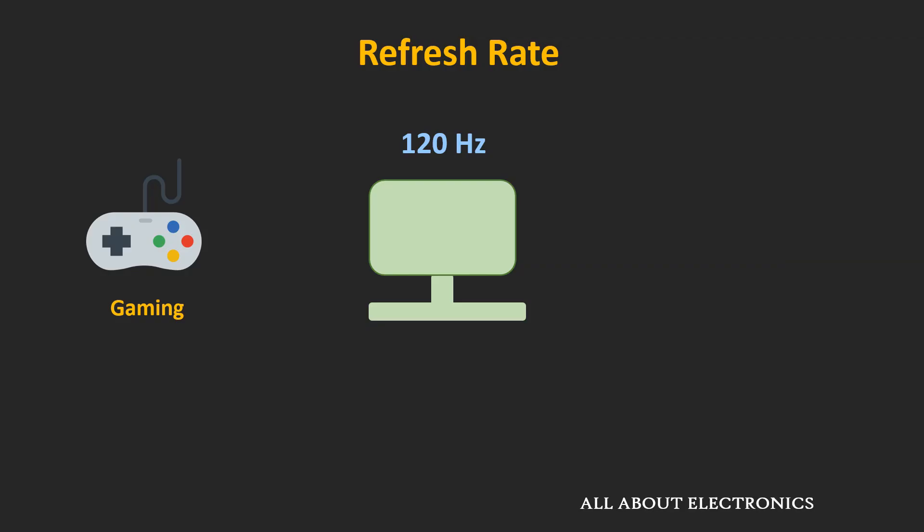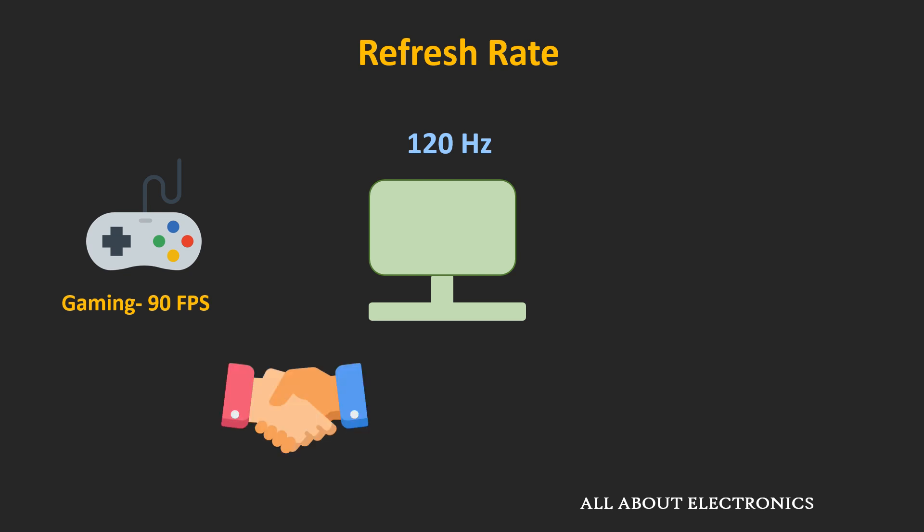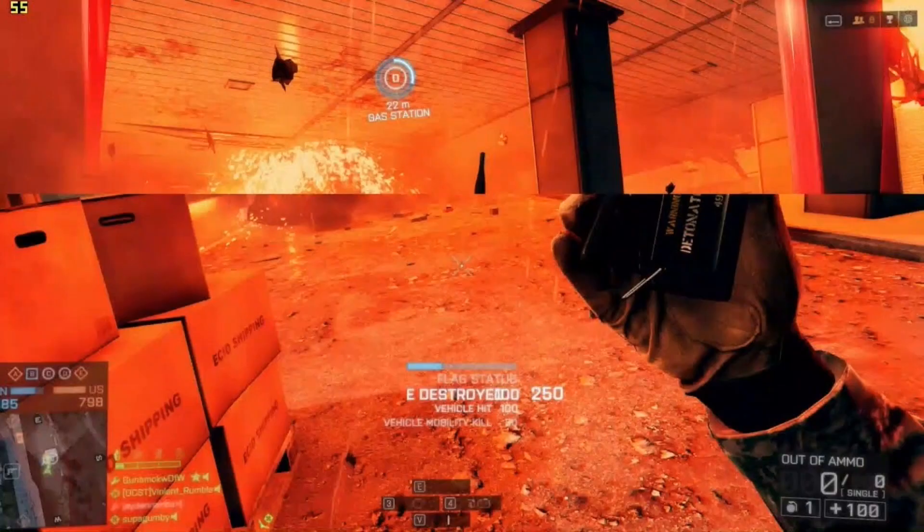Let's say you are playing a game on a PC that renders frames at 120 fps. To play such a game properly, the native refresh rate of the display should be at least 120 Hz. If you play on a 60 Hz monitor, it can only show 60 fps. On the other hand, if you have a 120 Hz display but the PC outputs frames at 90 fps, and there is no synchronization between the monitor and the graphics card, then you might see screen tearing while playing.